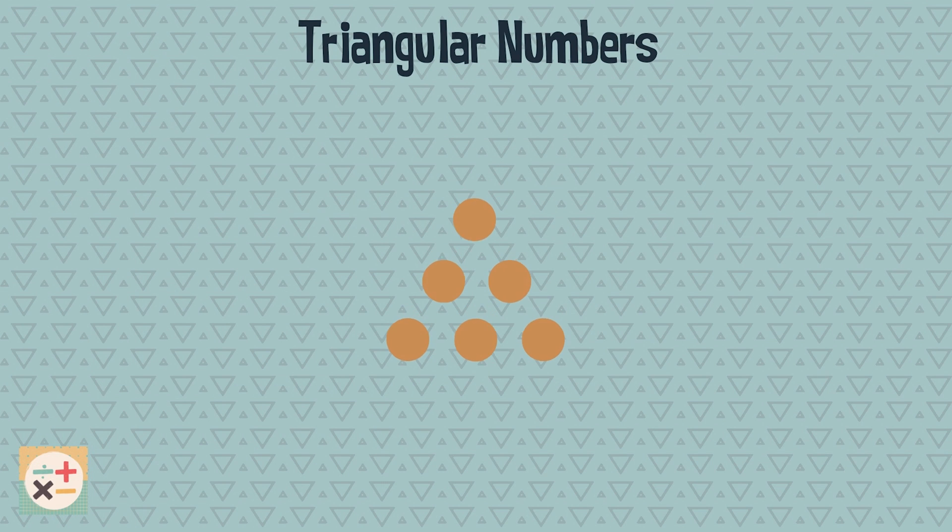A triangular number is the number of dots that can be arranged into an equilateral triangle.